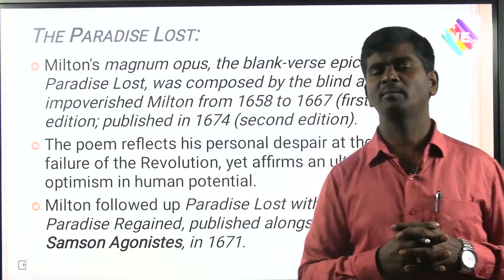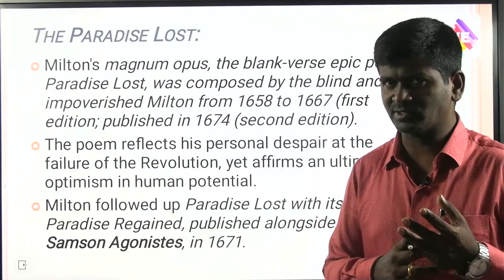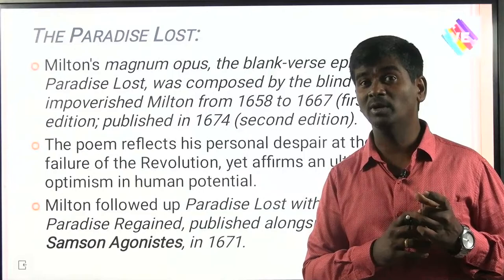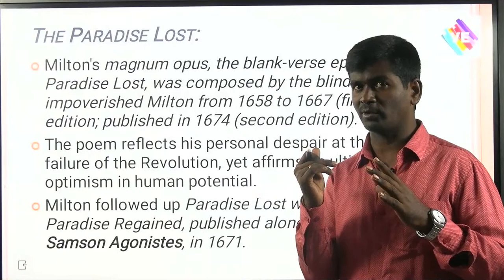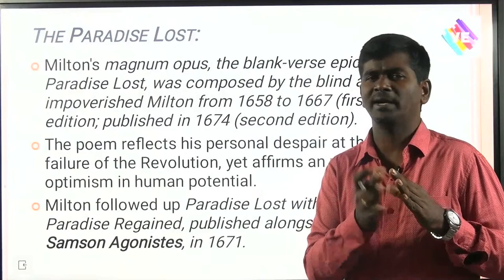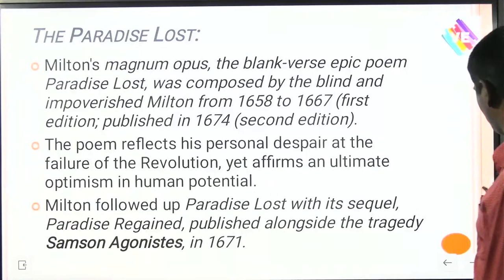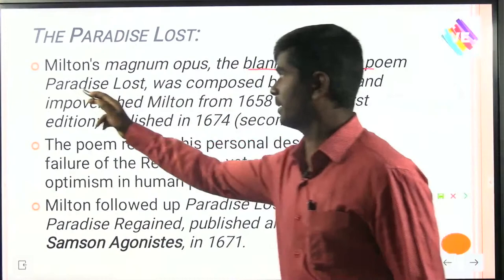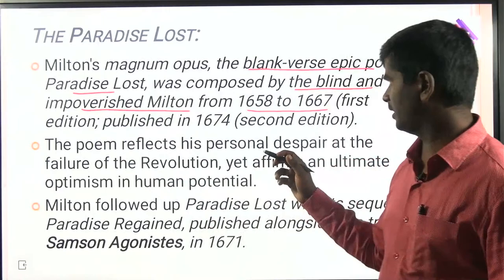Now, some basic knowledge about Paradise Lost. The major theme is 'to justify the ways of God to man' — the fall of man and how Adam and Eve were cheated and thrown out of the Garden of Eden. Milton's magnum opus, the blank verse epic Paradise Lost, was composed by blind and impoverished Milton from 1658 to 1667. First edition in 1667 had 10 cantos; the second edition had 12 cantos.